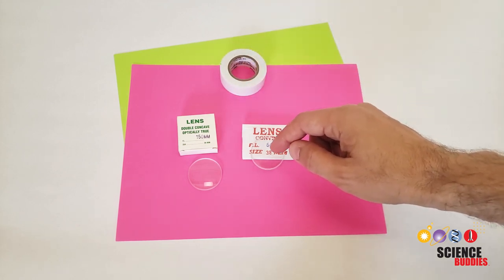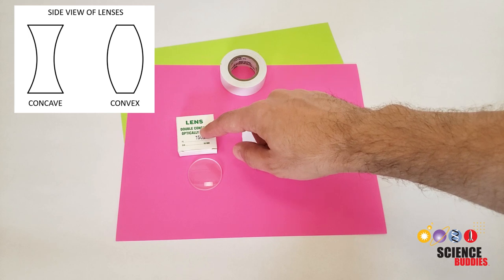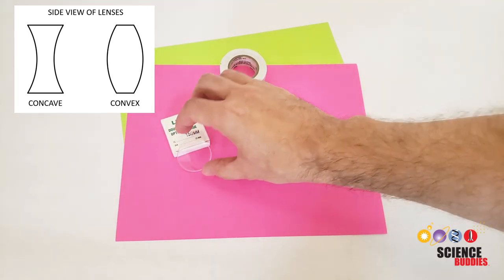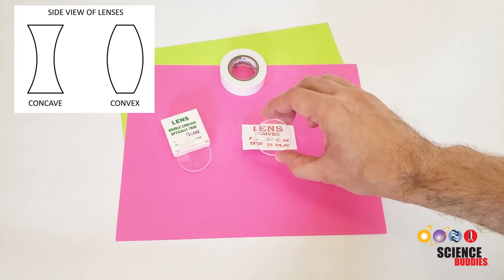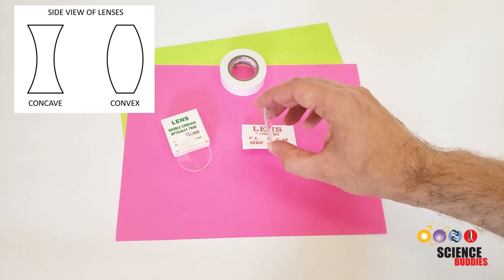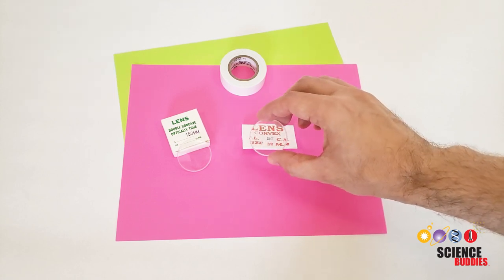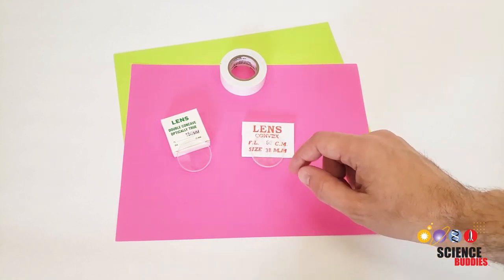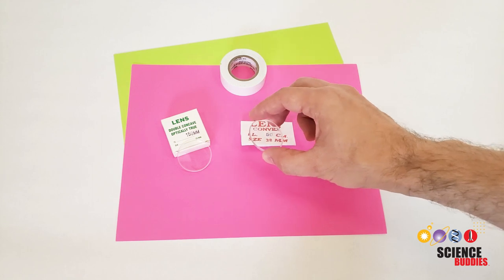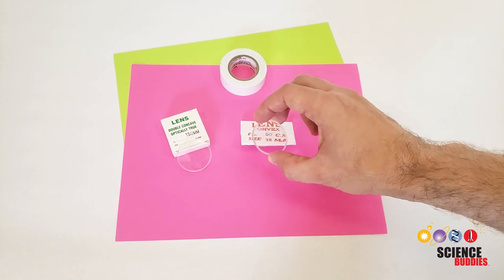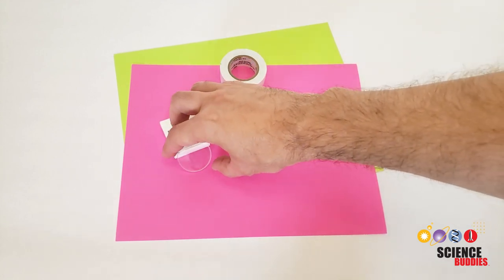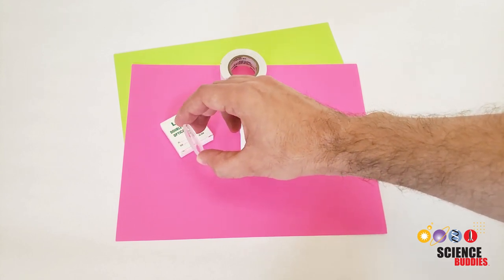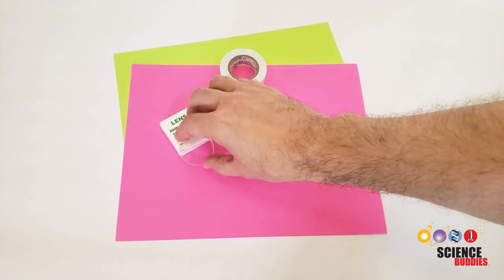You will need two different types of lenses. A double concave lens which is curved inward on both sides and a double convex lens which is curved outward on both sides. If you follow the link in the description you can find links where you can purchase these two specific lenses. The curvature of these lenses is very slight so it can be hard to tell the difference just by looking at them, but if you get them mixed up when you're all done you can simply flip your telescope around if you wind up looking in the wrong end.